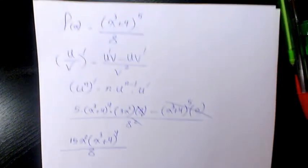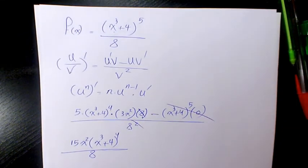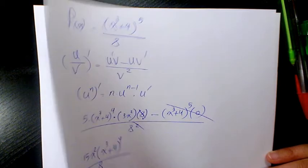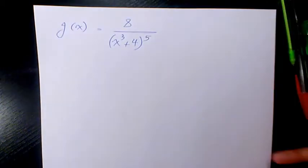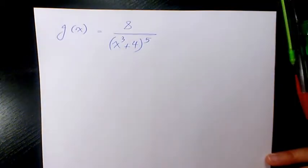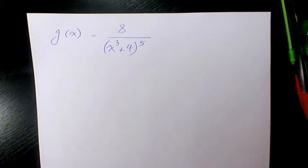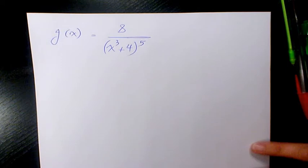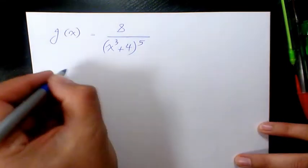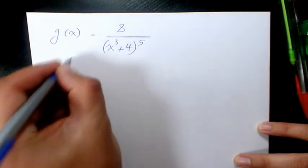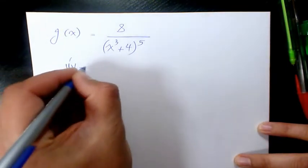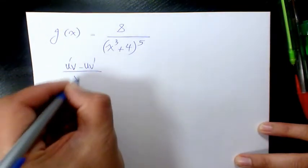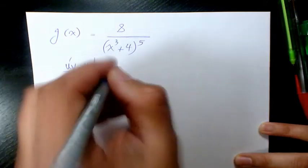The next function is 8 over (x³ + 4)⁵. We apply the quotient rule again: u prime v minus u v prime divided by v squared.